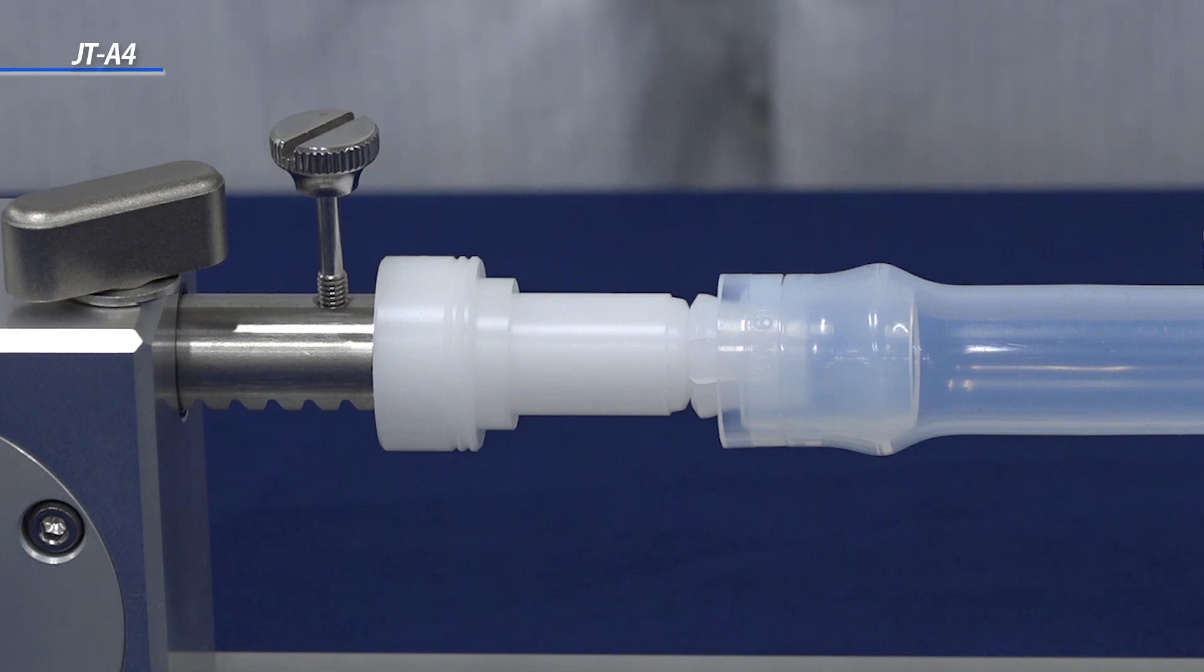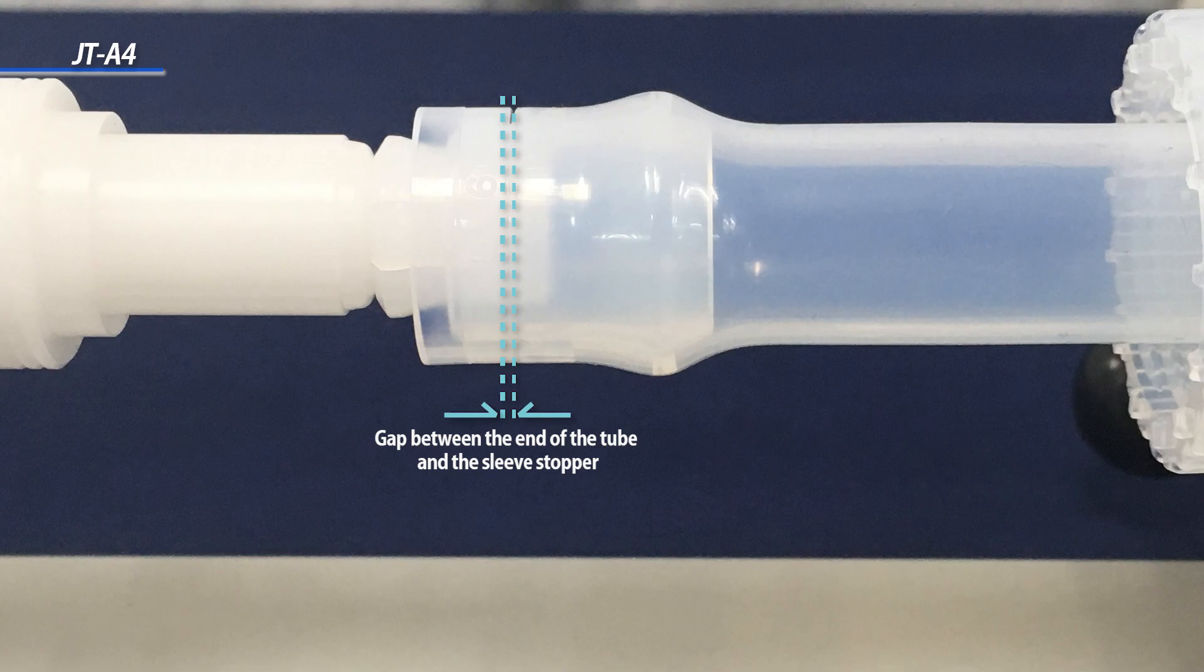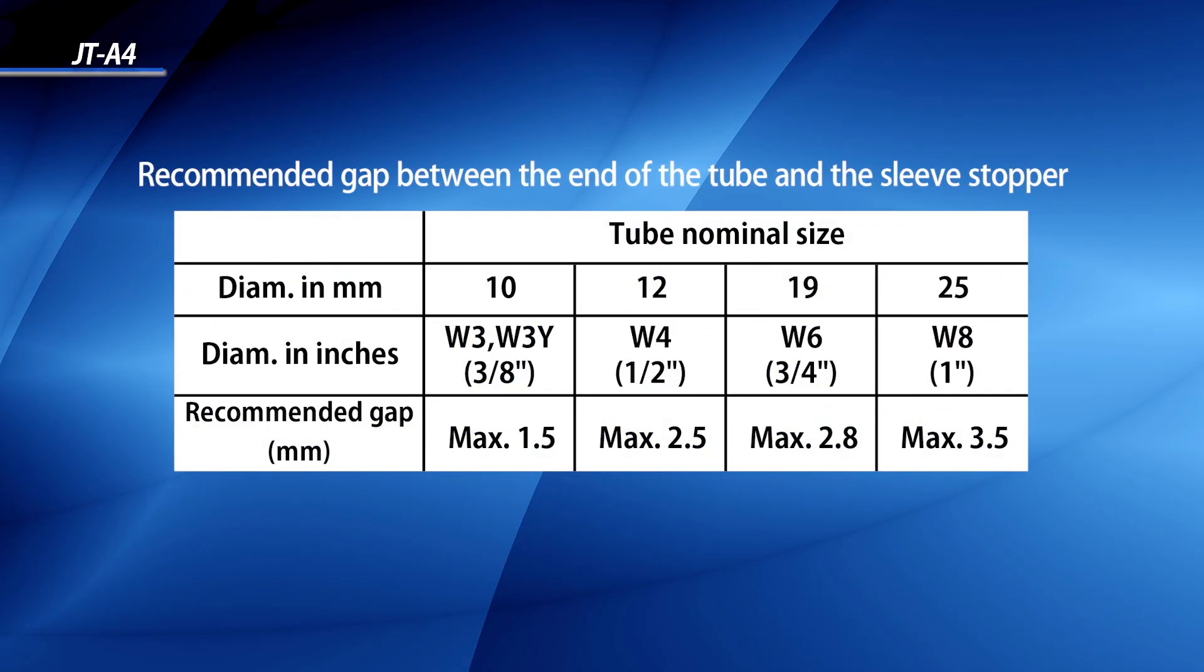The sleeve is fully inserted when the edge of the sleeve is inserted near the edge of the tube. There may be a gap between the edge of the tube and the sleeve as shown here. As long as at least half of the sleeve is inserted into the tube, there should not be a problem.